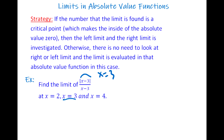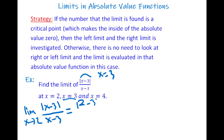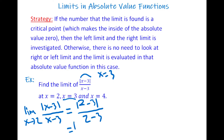What is the limit of this function? The limit as x goes to 2 of |x − 3| / (x − 3). Just put 2 instead of x: it's |2 − 3| / (2 − 3) = |−1| / (−1) = 1 / (−1) = −1.